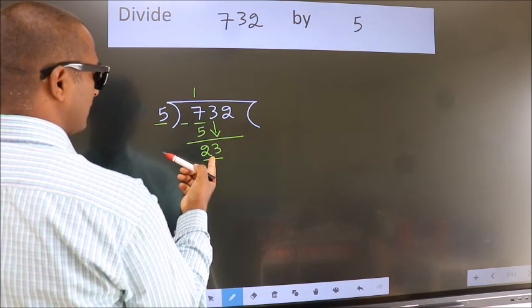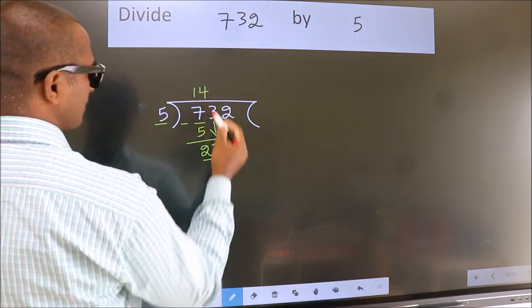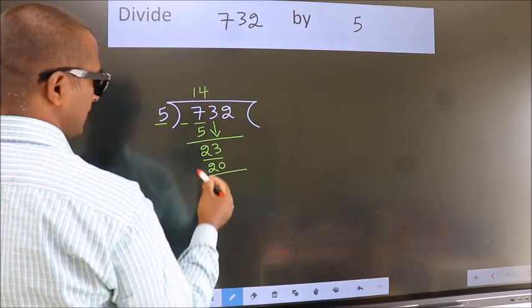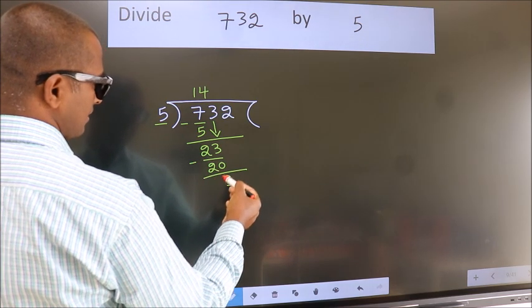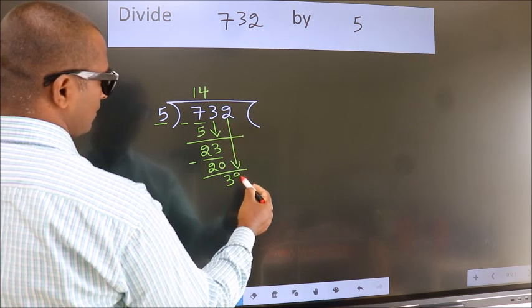A number close to 23 in the 5 table is 5 times 4 is 20. Now we subtract. We get 3. After this, bring down the beside number: 2 down, so 32.